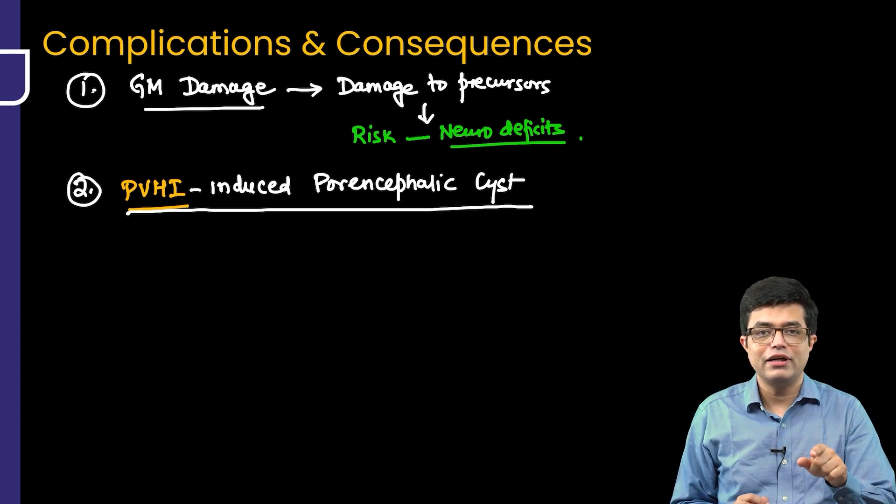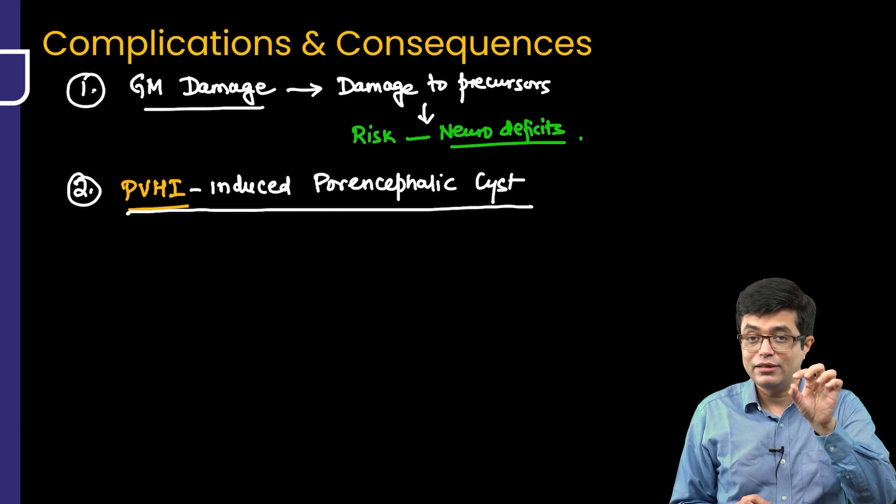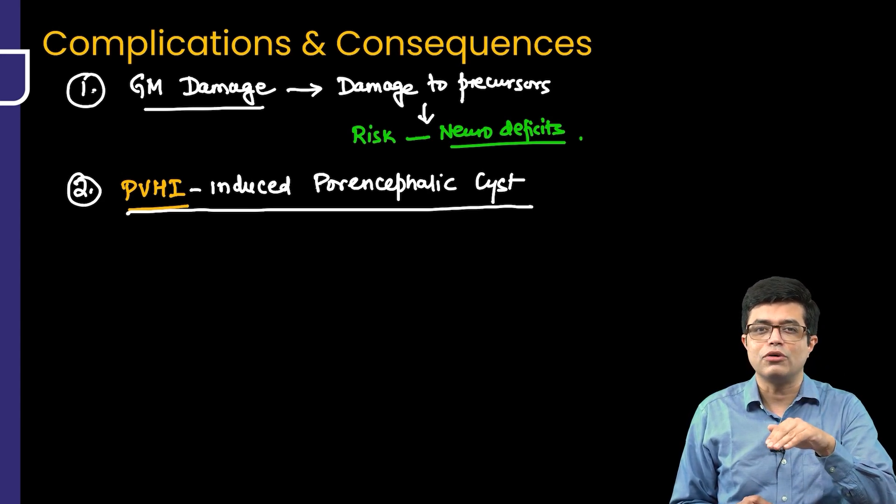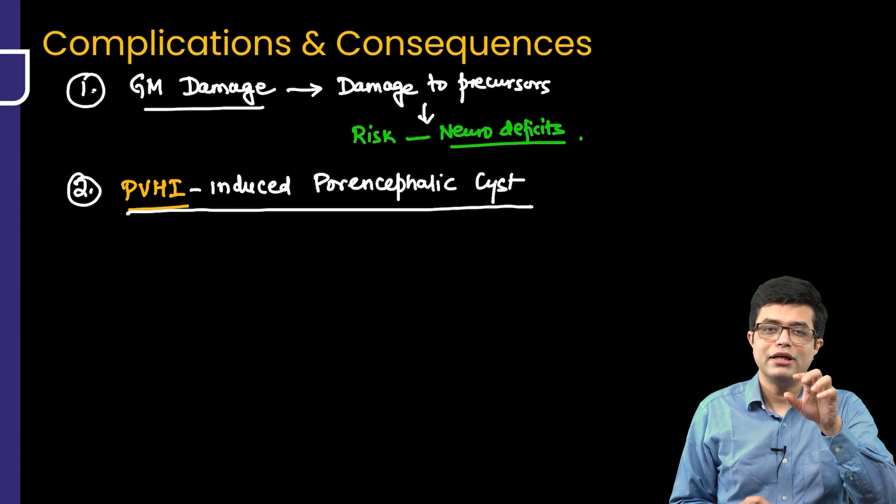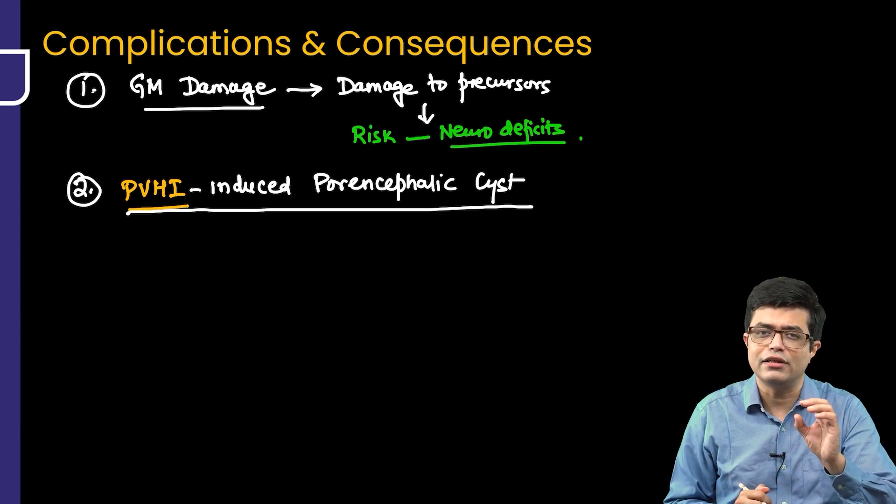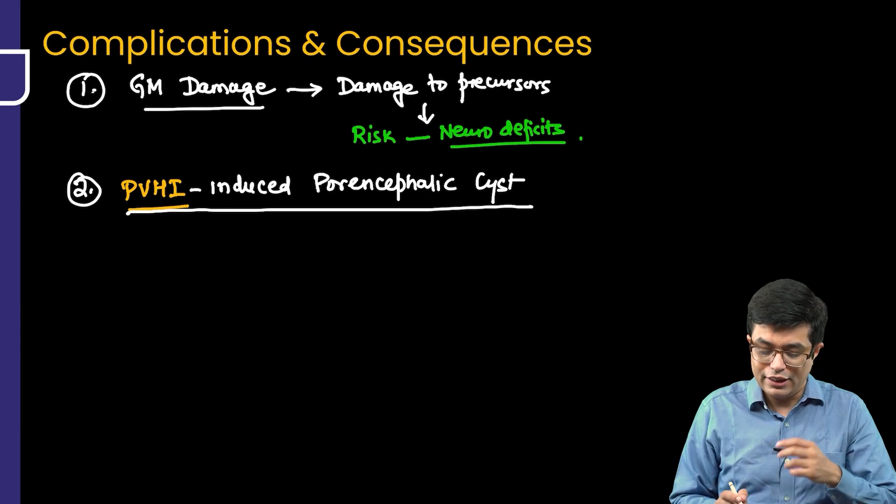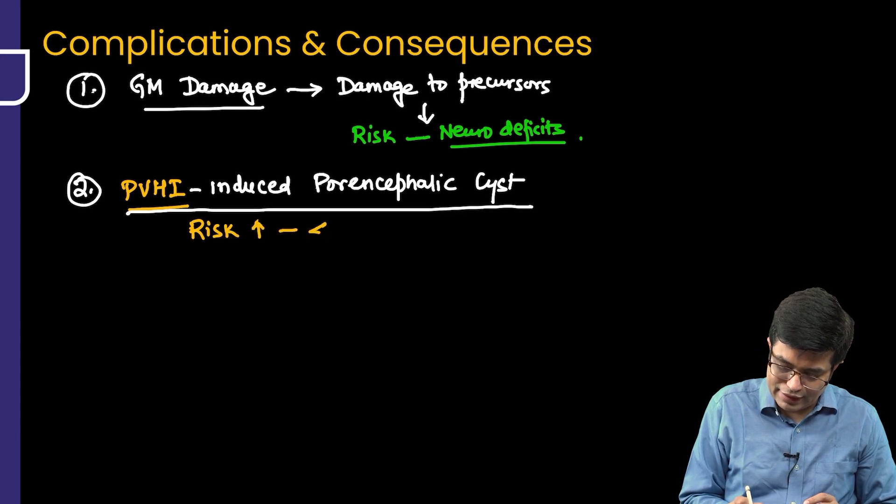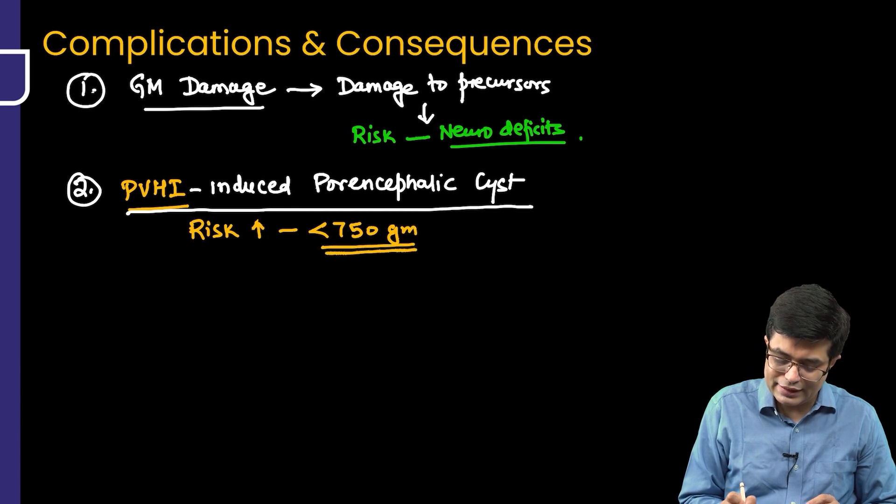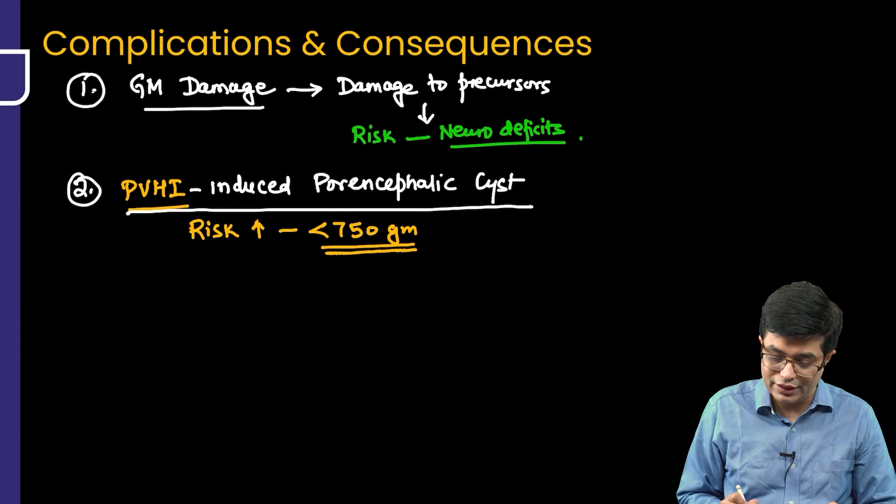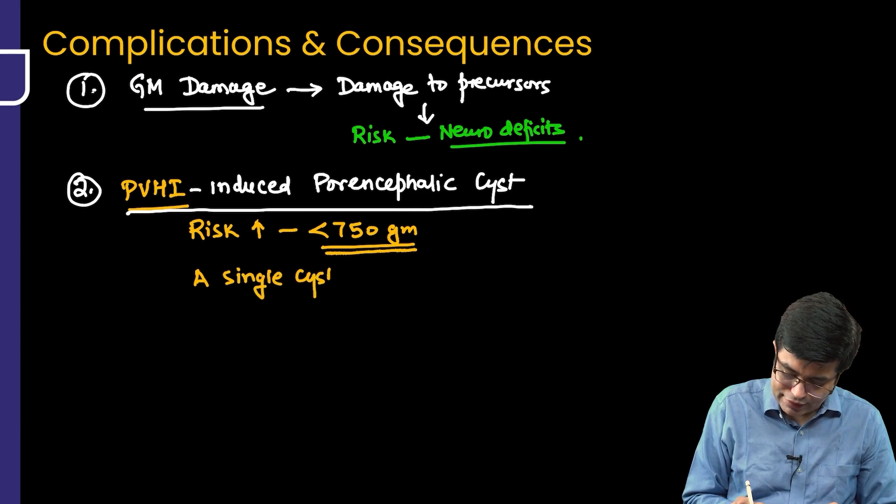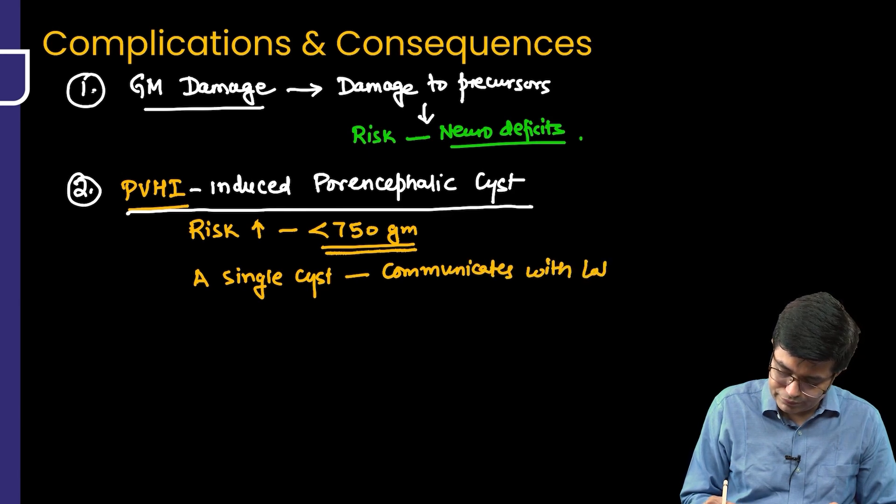What happens is hemorrhagic infarction will happen and many times brain parenchyma in that ipsilateral hematoma which was formed in the brain parenchyma, that will undergo resorption and the neuronal tissue will undergo resorption and a cyst will be formed. It will be a single cyst and often it will be communicating with the lateral ventricle. That cyst is what you call as porencephalic cyst. Chances of porencephalic cyst are more, risk is increased in babies less than 750 grams.